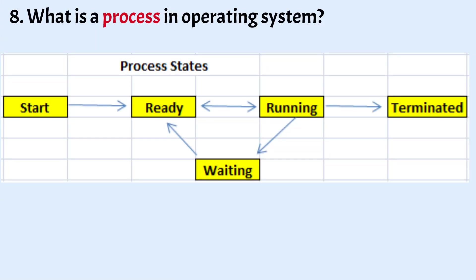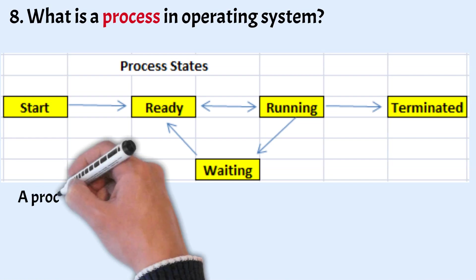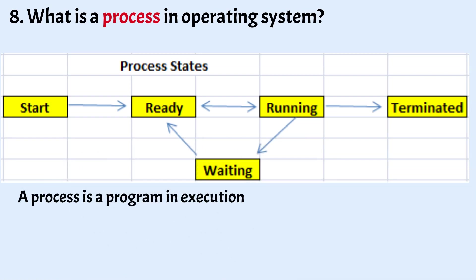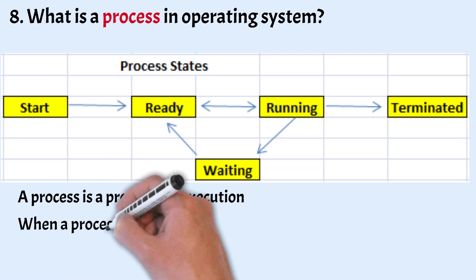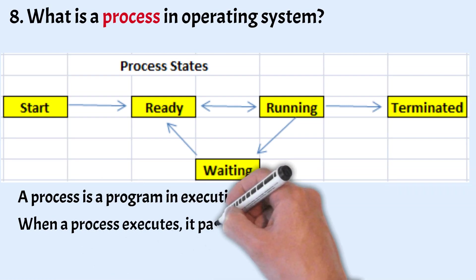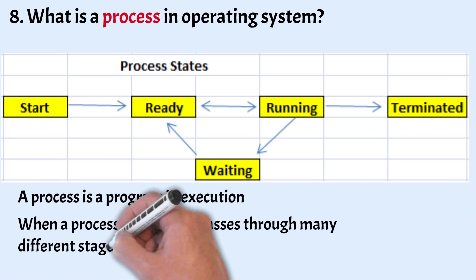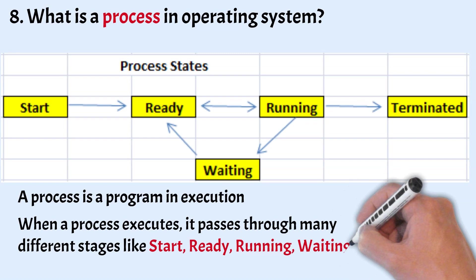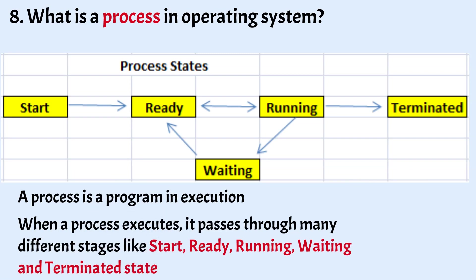What is a process in an operating system? A process is a program in execution. For example, when we write a program in C, we save, compile and run it — the moment we run it, it is transferred to main memory and becomes a process. When a process executes, it passes through many different stages: start, ready, running, waiting and terminated state.